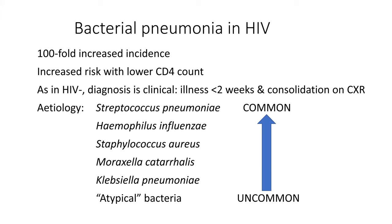Bacterial pneumonia has increased a hundredfold in HIV infection, and the risk becomes exponentially higher as the CD4 count drops. The diagnosis is exactly the same as in HIV-negative people — it's a clinical diagnosis: a short illness with consolidation on the x-ray. The etiology is similar to what we'd expect from community-acquired pneumonia in people with comorbidities like diabetes or COPD.